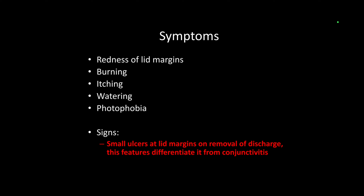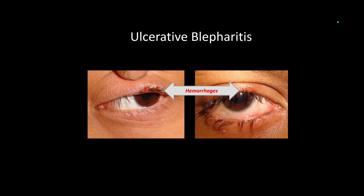The symptoms are almost like redness of the lid margin, burning, itching, watering, and photophobia. In this case you will get small ulcers on the lid margin with discharge. In this picture you can see the ulcerative blepharitis — in some areas the scales are removed and there is bleeding and healed ulcers.